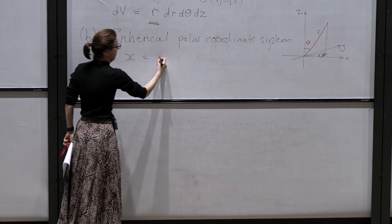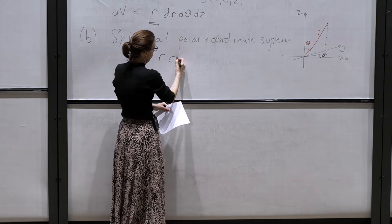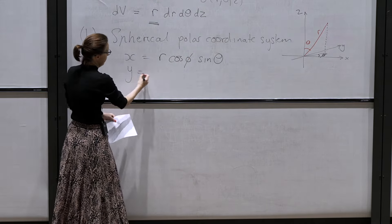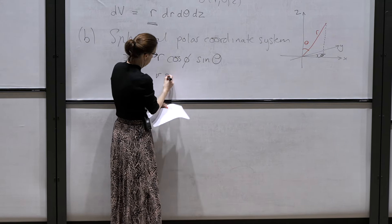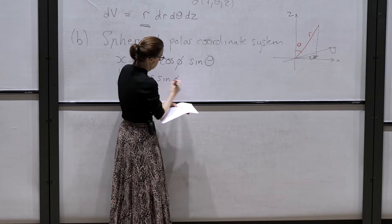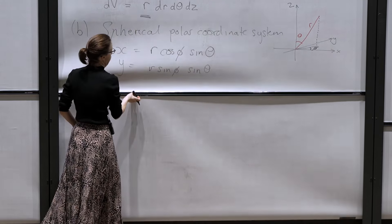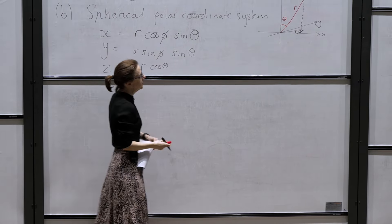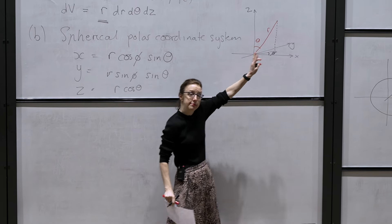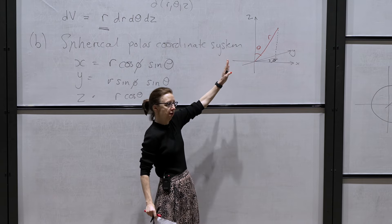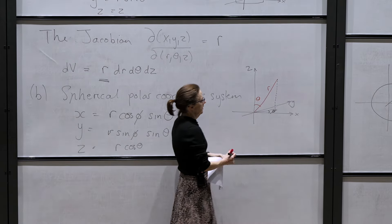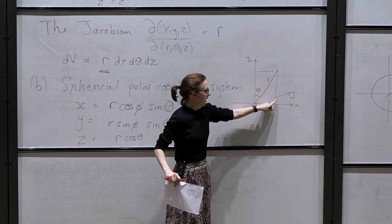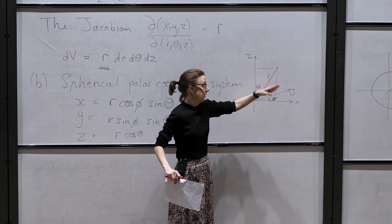In spherical polar coordinates, x equals r cos(phi) sin(theta), y equals r sin(phi) sin(theta), and z equals r cos(theta). So r cos(theta) tells you how far up you are on the z-axis, r sin(theta) gives the radial distance in the transverse plane, and then you need the components onto the x and y axes.